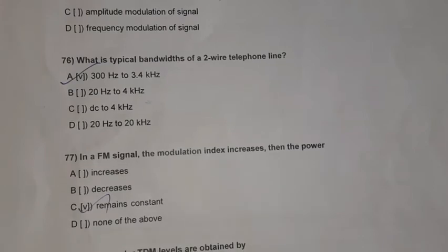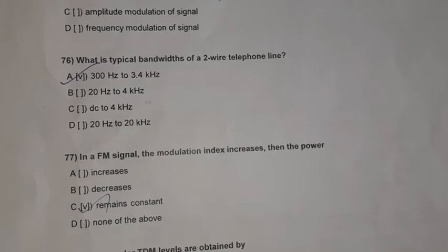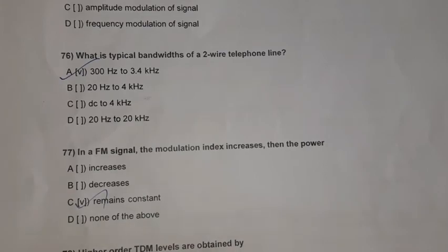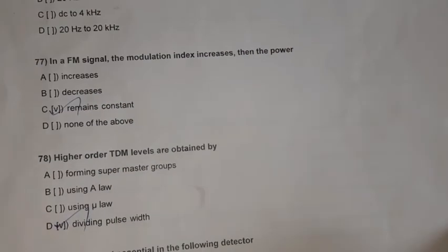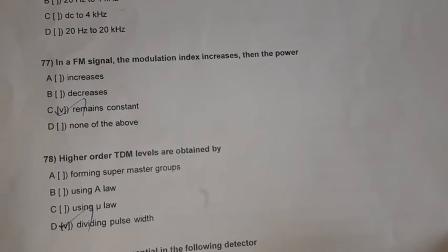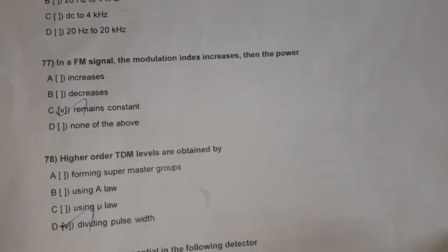Question 77: In an FM signal, when the modulation index increases, the power remains constant. Question 78: Higher order TDM levels are obtained by dividing pulse width.